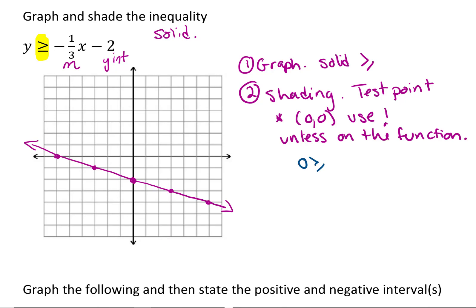So zero is less than or equal to negative one third times zero. So I plug in for both x and y minus two. And then I'm going to simplify. So zero is less than or equal to negative two. Then you want to determine is the statement true or false.